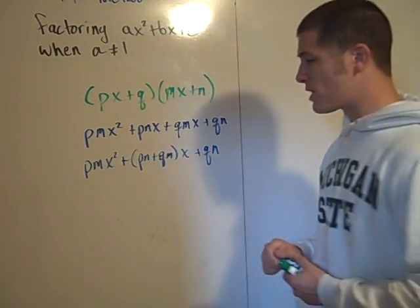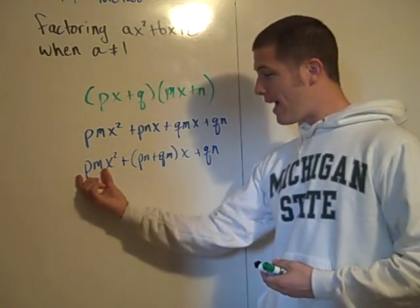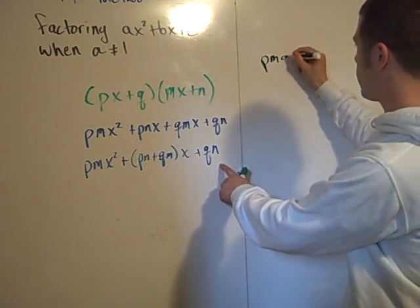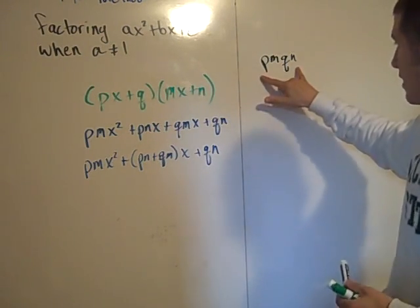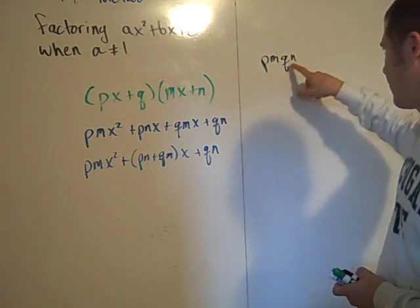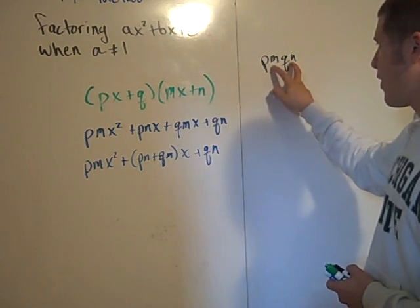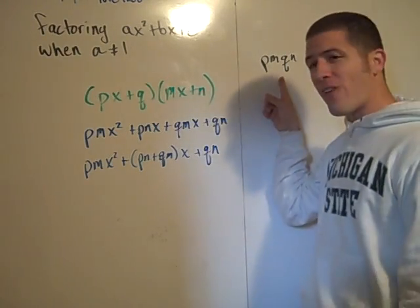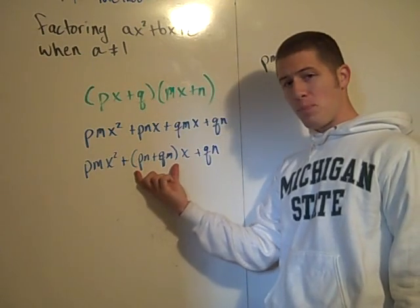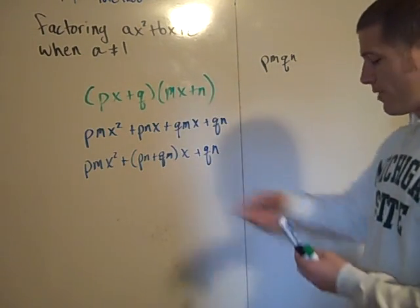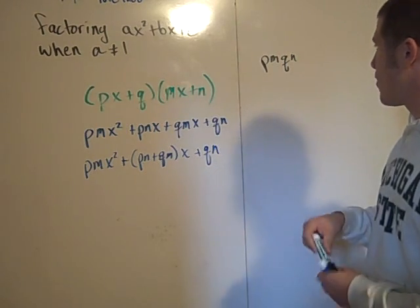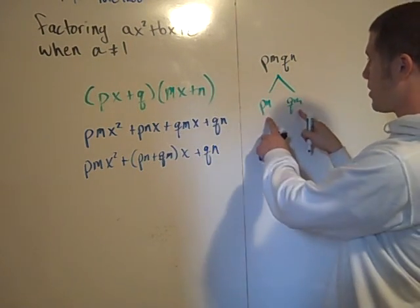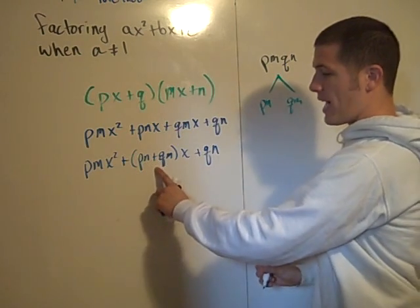Now my claim initially was to multiply this a value by this c value. And when you do that, you have pm times qn. And this has, you know, a lot of factors. This has a factor of p, has a factor of m, has a factor of q, has a factor of n, has a factor of pm, has a factor of mq, has a factor of qn, has a factor of pn. So you see all the factors that this thing has. Now, my claim was that there are two factors of this number that add to b. And in fact, if you look at this, you can see that the factors of this number that add to this value are pn and qm. Those are both factors of this product that add to this number.